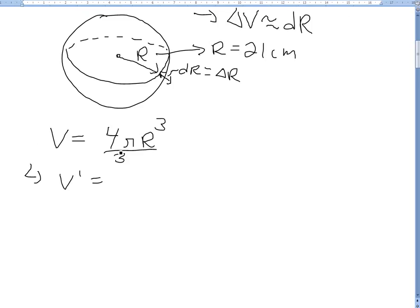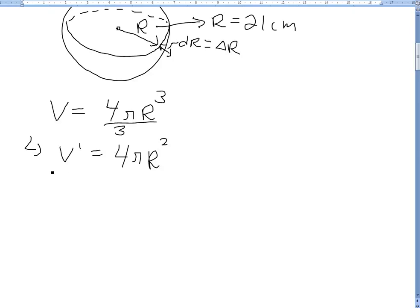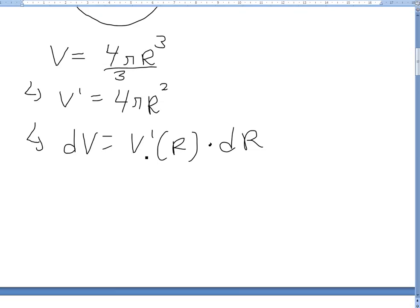So we bring the 3 down, it's going to cancel the 3, so we'll be just left with 4π R². And like I showed in my earlier video in linear approximation we could approximate, basically dV is equal to V' of R, that's this value right here, times this by dR.